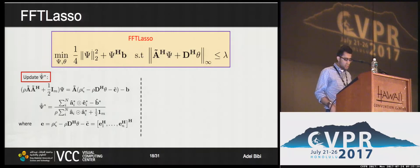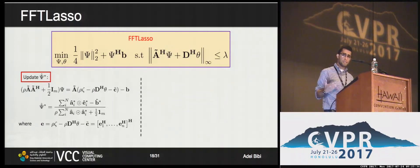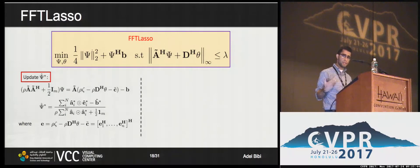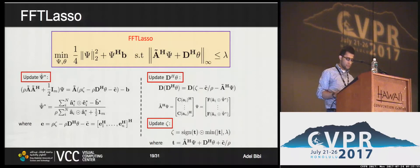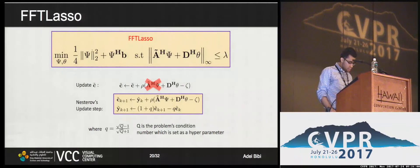The dual variable ψ update still requires solving linear systems. However, there is structure in Ã Hermitian, which allows us to solve the updates completely in the Fourier domain by using the diagonalization of these circulant matrices. We no longer need to do any linear system solving — only matrix-vector multiplications — and FFT is the most expensive operation. In fact, looking at all the remaining updates, all of them involve only element-wise operations, and again FFTs are the most expensive operations.